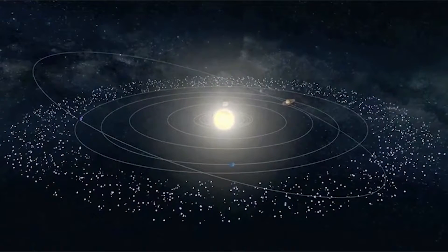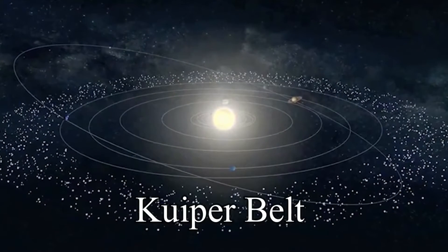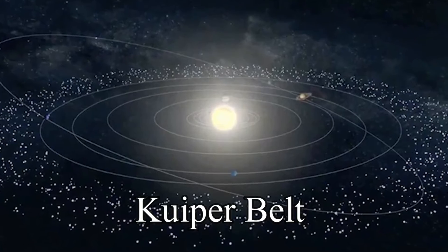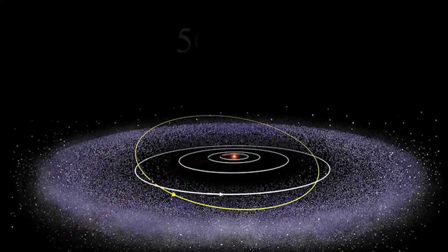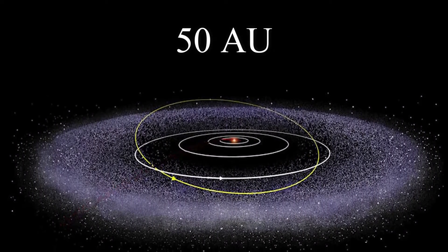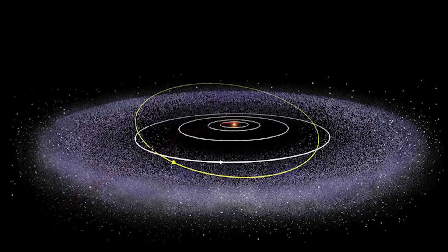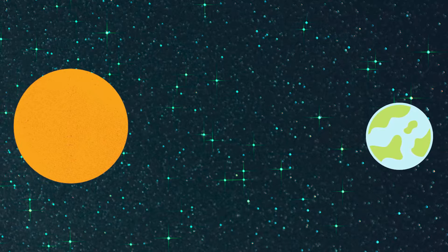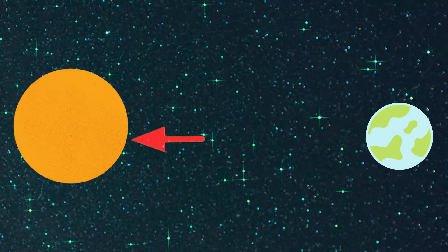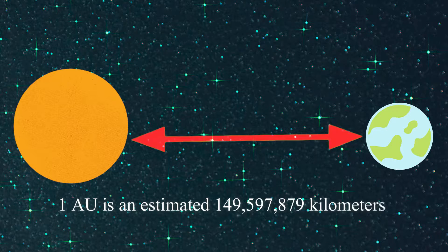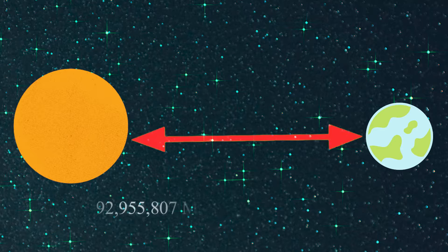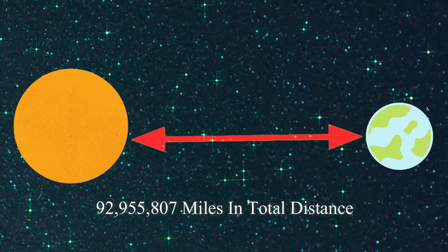Zooming out a bit further, we take a look at the Kuiper belt, which expands across the entire distance of our solar system and is approximately 50 AU. An AU is a unit of measure that stands for astronomical unit and is the equivalent of the distance between the Earth and the Sun. One AU is an estimated 149,597,879 kilometers, or 92,955,807 miles in total distance.